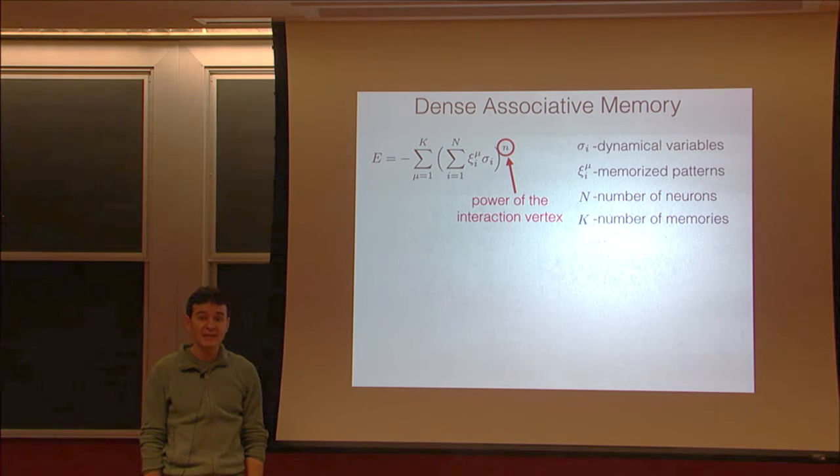The capacities of these models in cases when memories are random binary patterns were extensively studied in the 80s. It was demonstrated that these models make it possible to store a much larger number of memories compared to the quadratic case.